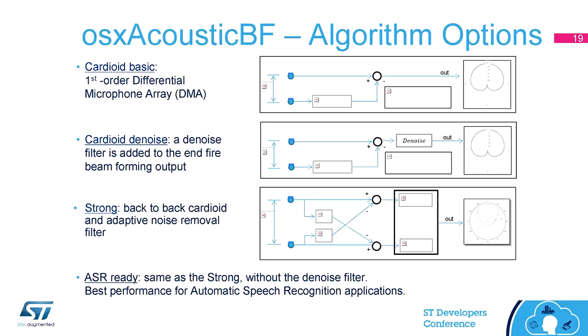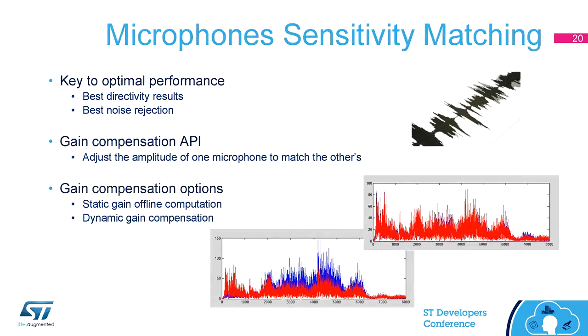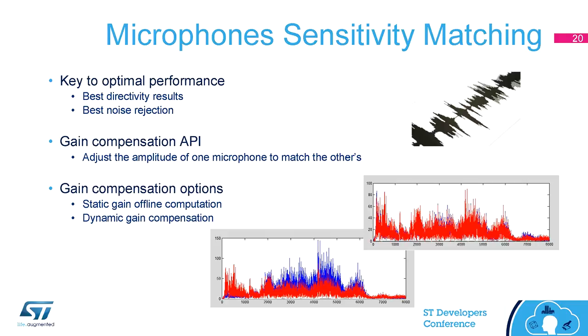One important consideration is microphone sensitivity matching. Remember I made the example of two microphones where subtracting the output gives zero — this is true only if the microphones are identical. Every microphone has its own gain, managed by a parameter called sensitivity. At ST we make digital microphones that match sensitivity at plus or minus 1 dB, making them optimal for beamforming. But in our software library, we do some additional fine-tuning of the gain — additional sensitivity matching.